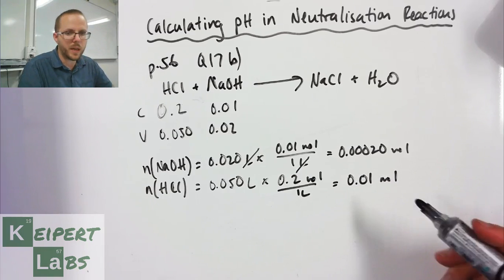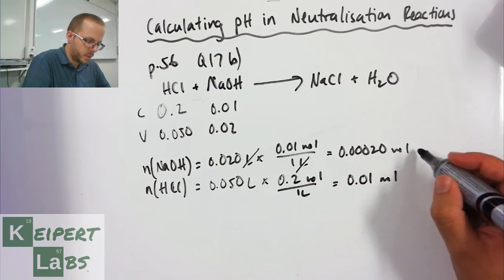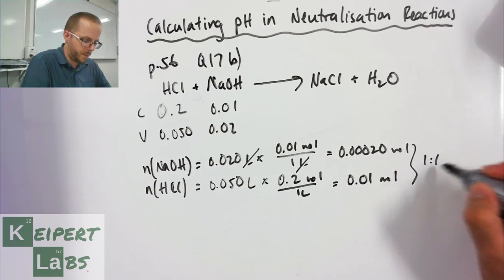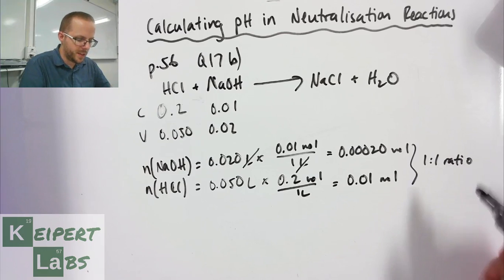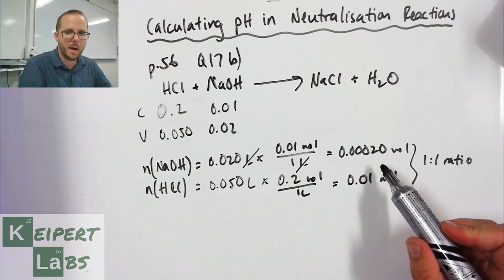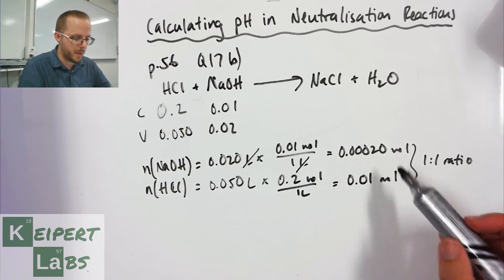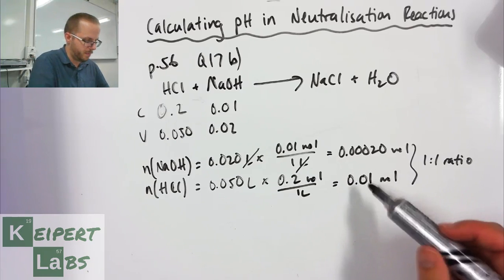When we're going to have a reaction between these two, we can see we've got a 1 to 1 ratio. This means you can see that our hydrochloric acid is in excess and our base is our limiting reactant, so we're going to be left with an excess number of moles of acid.